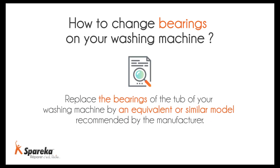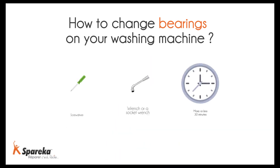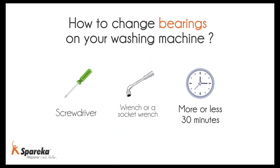Replace the bearings of the tub of your washing machine by an equivalent or similar model recommended by the manufacturer. You'll need a screwdriver and a wrench, ideally a socket wrench, in order to change the bearings.